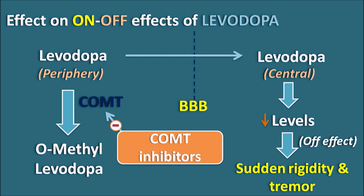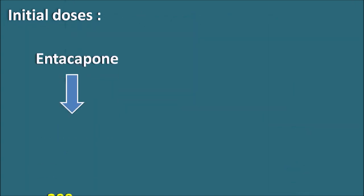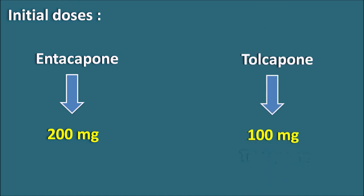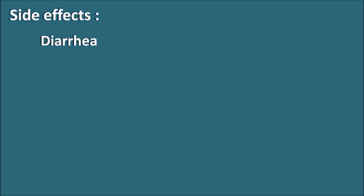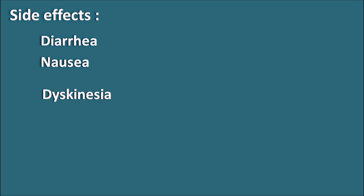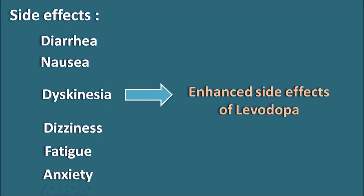That is why these drugs are given along with levodopa. Regarding initial doses: entacapone is initially used at a dose of 200 mg and tolcapone is used at a dose of 100 mg. These drugs are not used alone; they are given along with levodopa. Common side effects include diarrhea and nausea. Another important side effect is dyskinesia — which is actually a side effect related to levodopa, but when these drugs are combined, dyskinesia can be increased because they raise the levels of levodopa within the CNS. Other side effects include dizziness, fatigue, and anxiety.